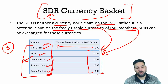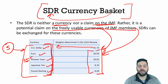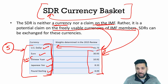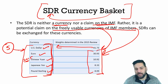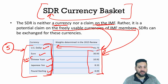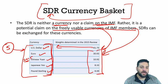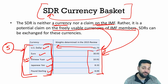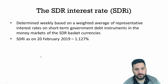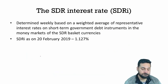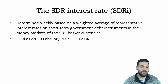These freely usable currencies are currencies commonly used in international trade. After every five years, the IMF reviews these currencies to evaluate whether any currency needs to be added or removed from the existing basket of five currencies.